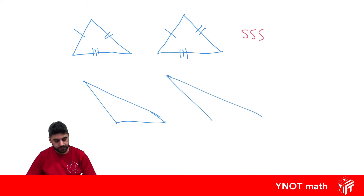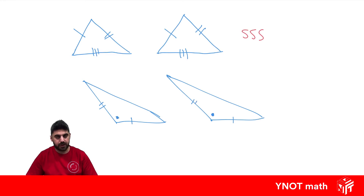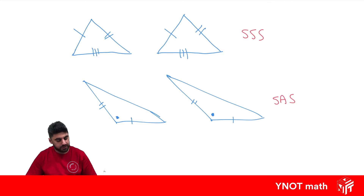Let's look at these two triangles. If we know this side equals this side, this side equals this side, and this angle equals that angle, that's also enough information to know that the two triangles are congruent. We call this Side-Angle-Side. It's important to note that the angle is in the middle of the two sides that are equal, which is why the angle is between the two sides. If it were rearranged, it might spell something else.